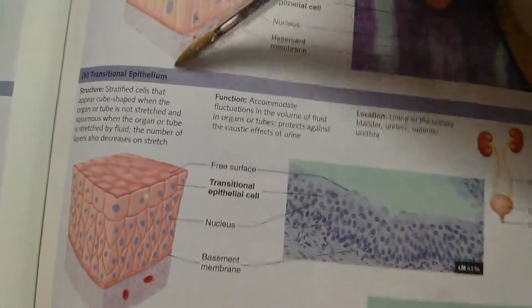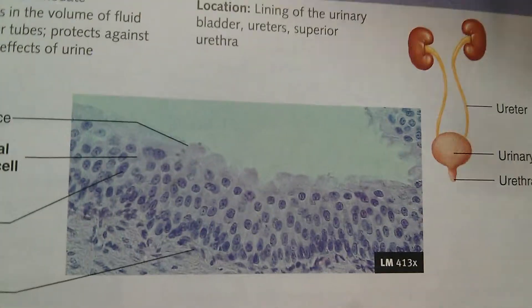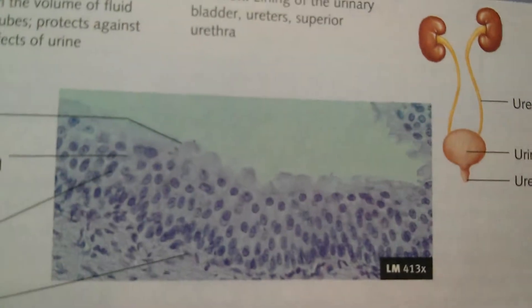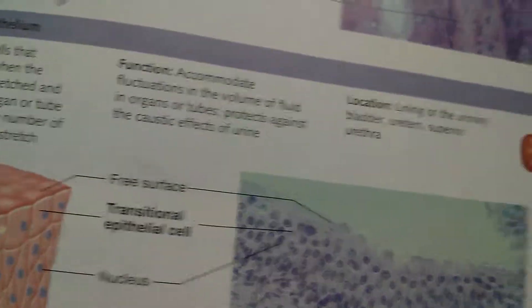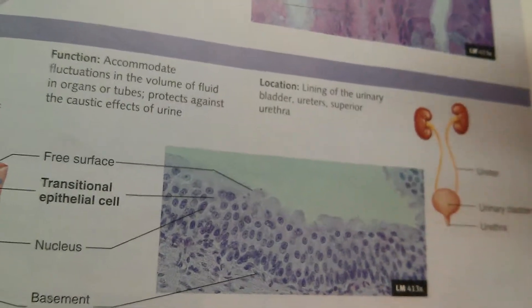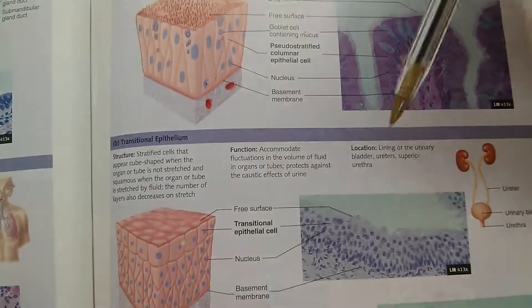The last type is transitional epithelium, found in the bladder. When the bladder is empty and there's no pressure to make it expand, the cells appear cuboidal. But as the bladder fills with fluid and stretches, the cells flatten out into squamous-looking ones. So they start out cuboidal when empty and then transition — hence the name — into squamous as it expands. Pretty cool.